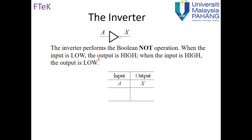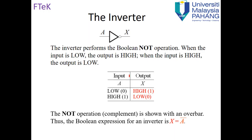The inverter performs the Boolean NOT operation. If we have input A and output X: if the input is low (zero, false), the output is high (true); if the input is high (one), the output is low. So the NOT operation is actually the complement, which we spoke about last time.